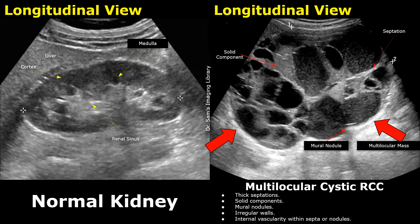Here is a case showing a large multilocular cystic renal mass. A locule refers to a compartment or cavity divided by septations or walls, and multilocular refers to multiple compartments. This mass is multilocular and cystic. It contains thick walls or septations, internal echoes at medium level.